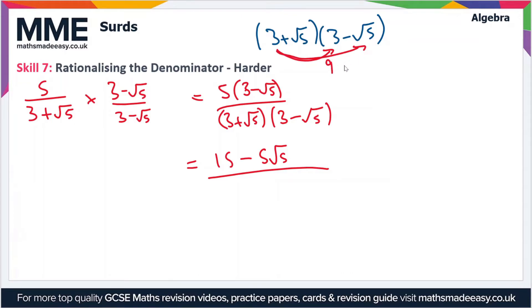3 times minus root 5 gives us minus 3 root 5. And then root 5 times 3 gives us plus 3 root 5. And then root 5 times minus root 5 gives us minus 5. So this is going to be our denominator here.